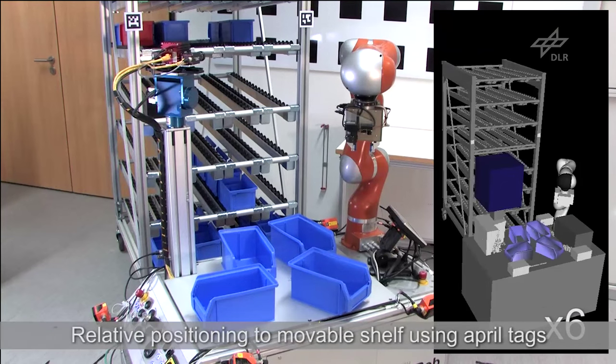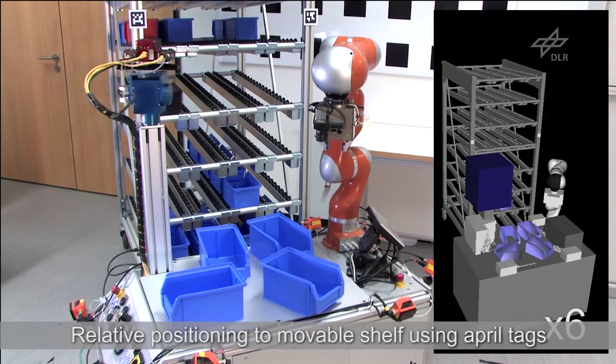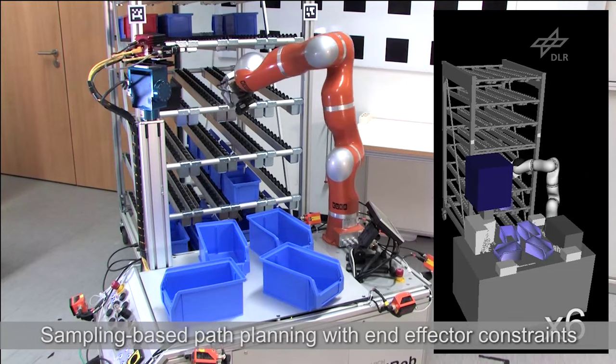its relative position with respect to the gravity shelf is estimated using April tags and is corrected. Then the detected small-load carriers are grasped and placed in the shelf.